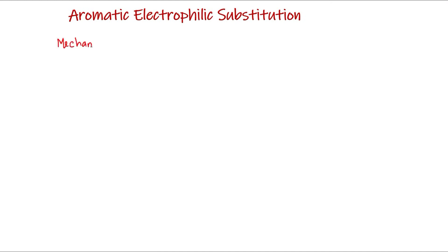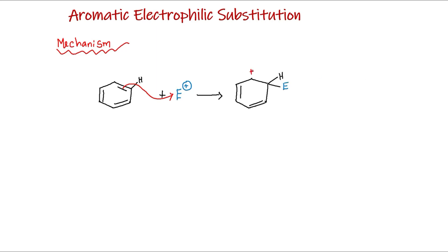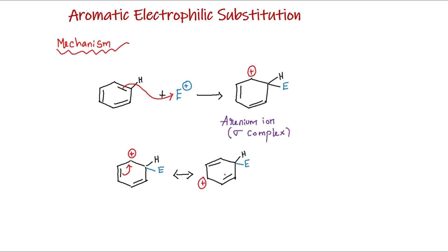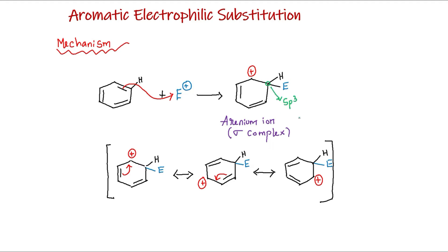Now let us see the general mechanism for all these reactions. When an electron-deficient electrophile approaches the electron-rich benzene system, it forms a bond with the benzene carbon using the pi electrons, due to which a sigma complex — otherwise called an arenium ion — is obtained as an intermediate. This arenium ion is stabilized by resonance; the positive charge is delocalized within the benzene ring. However, this arenium ion is non-aromatic because one carbon is sp3 hybridized while all other carbons are sp2 hybridized, so complete delocalization is not possible. In order to regain aromaticity, a hydrogen is lost, which leads to the formation of the substituted product.